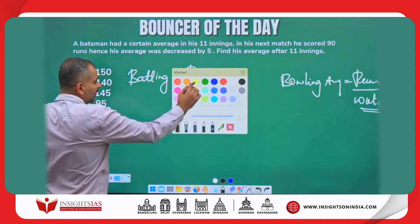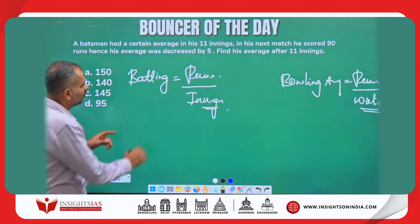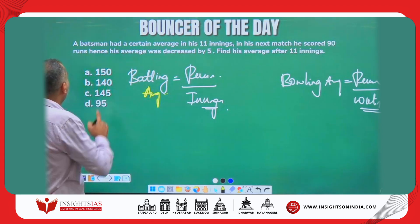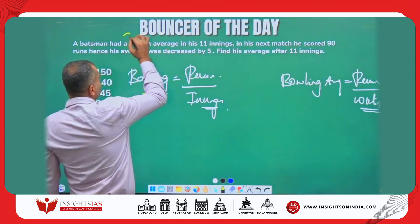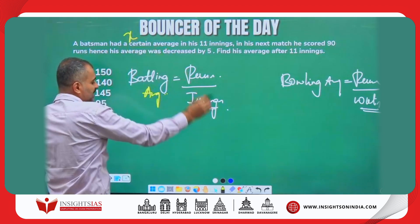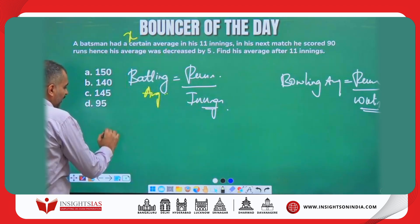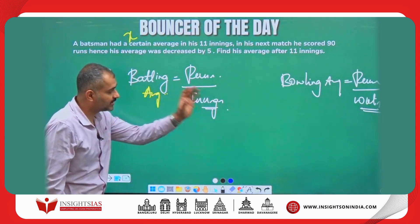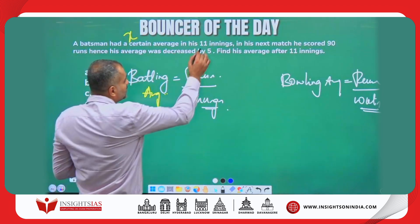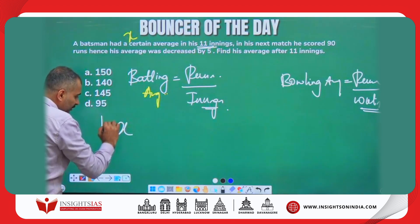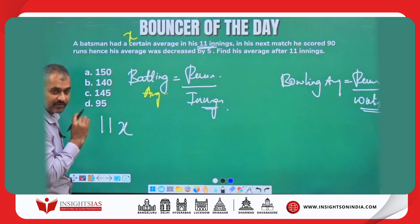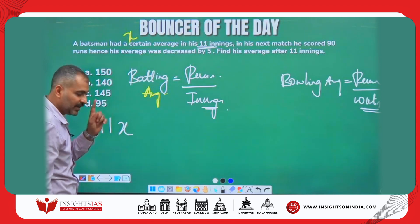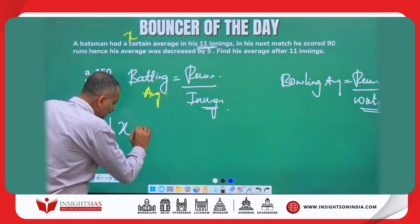Batting average is runs per innings. Now, a batsman had a certain average — I will consider that as x. So let the average be x. He is scoring x runs in each of the 11 innings, so he must have scored 11x in total.